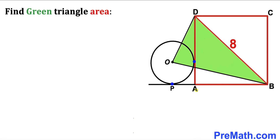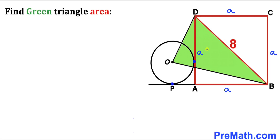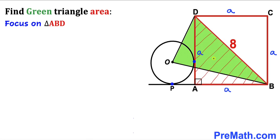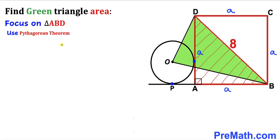Let's assume that the side length of this square is a. Then all the side lengths of this square are going to be a as well. Let's focus on this right triangle ABD whose side lengths are a, a, and 8. Now we are going to use the Pythagorean theorem on this triangle.